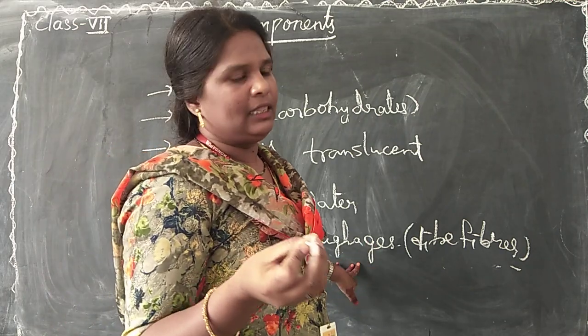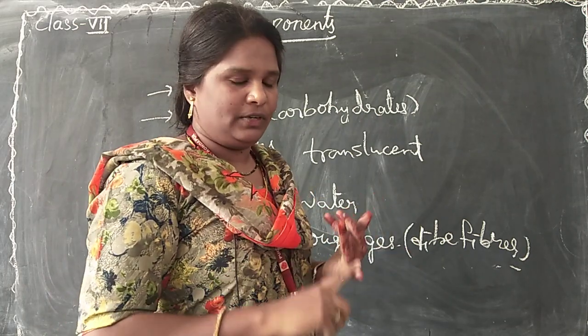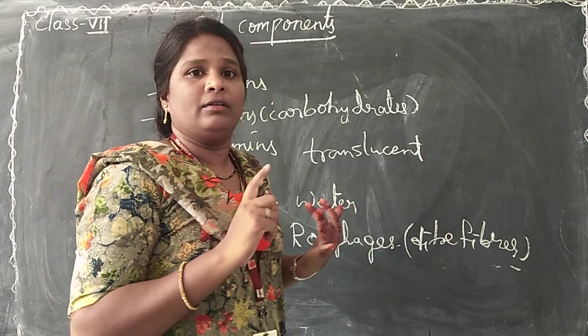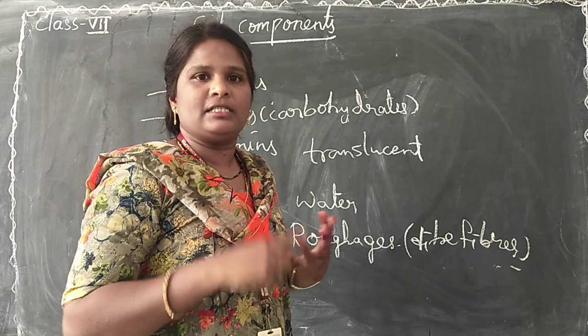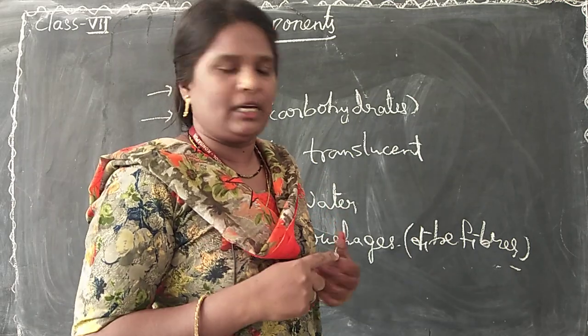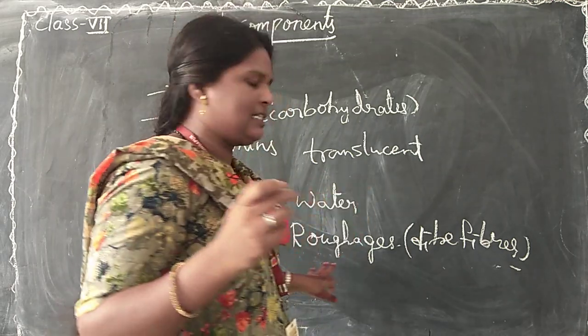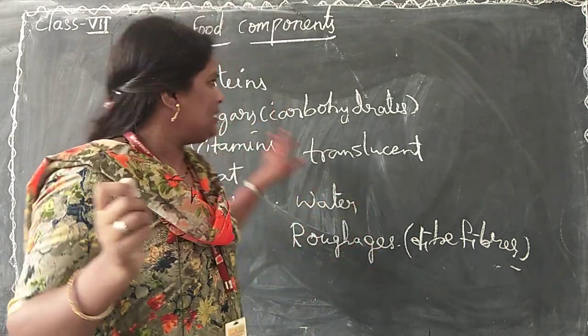Roughage are present in vegetables like ridge gourd, banana, and some other fruits and vegetables — these roughage are present in those. This is about your first lesson.